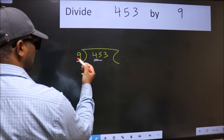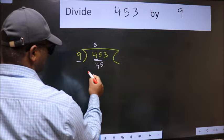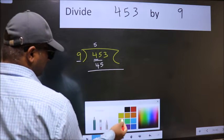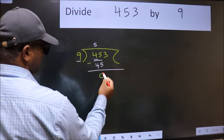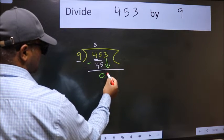When do we get 45 in the 9 table? 9 fives 45. Now we subtract and get 0. After this, bring down the next number, so 3 down.